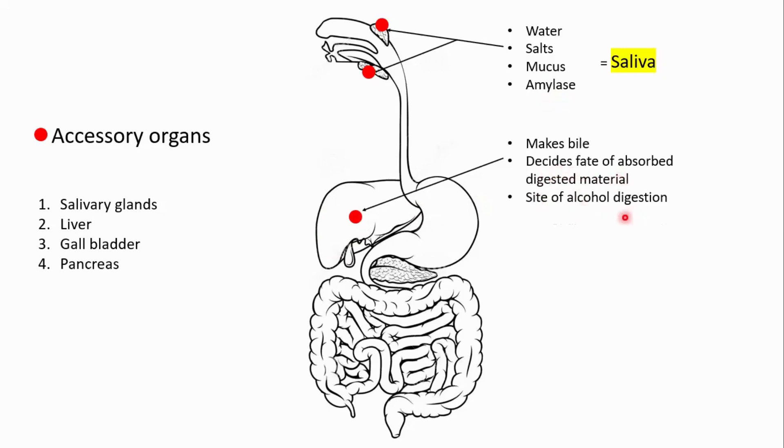The liver is also the site of alcohol digestion and bile is also made in the liver. But even though bile is made in the liver, it is actually stored in the gallbladder, which you'll find right under the liver.